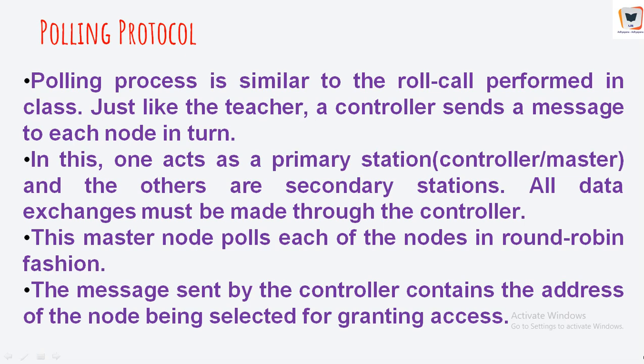The polling protocol eliminates collisions and empty slots that plague random access protocols, achieving much higher efficiency. However, it has drawbacks. First, it introduces a polling delay, since every node must be queried whether it wishes to send its packet. The amount of time required to notify a node that it can transmit adds delay. Also, if only one node is active, it still transmits at a rate less than R bps because the master node must poll each inactive node in turn.